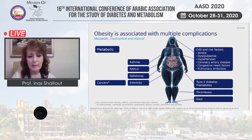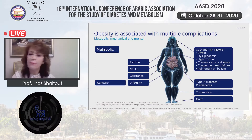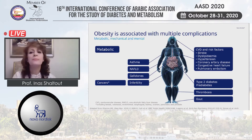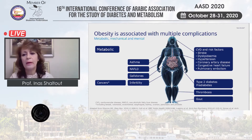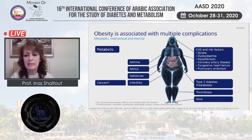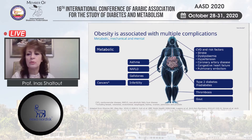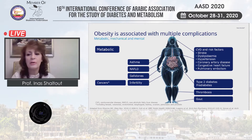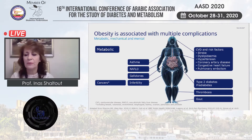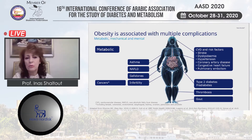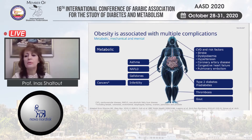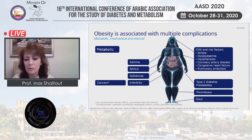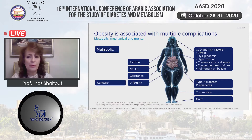There is also asthma, gallstones and gallbladder disease, infertility, increased incidence of cerebrovascular disease, and a risk factor for strokes, dyslipidemia, increased incidence of hypertension, coronary artery disease, congestive heart failure, and pulmonary embolism. Other metabolic disorders include gout and thrombosis, and of course a definite relation with type 2 diabetes and pre-diabetes.